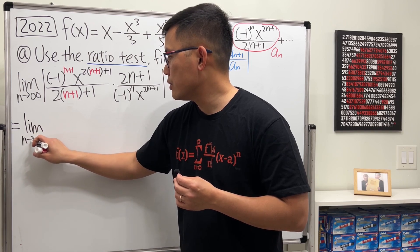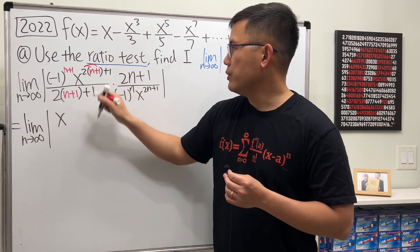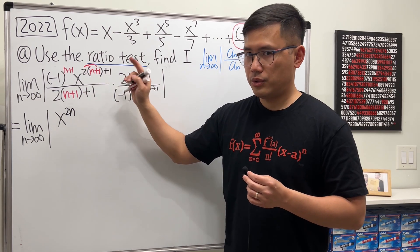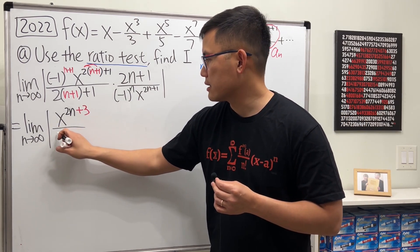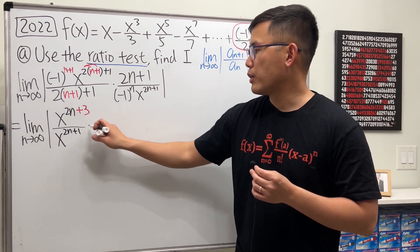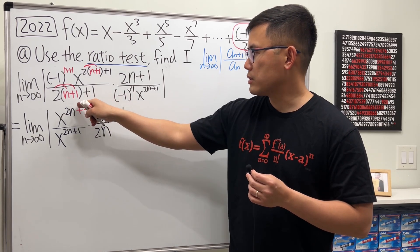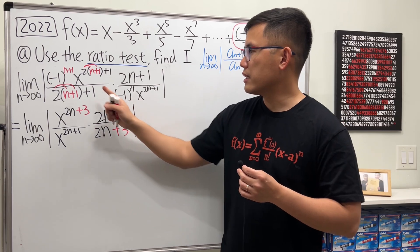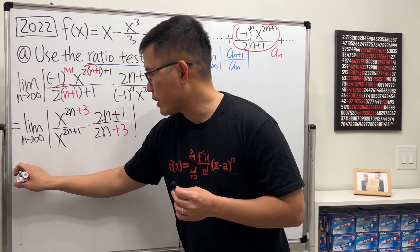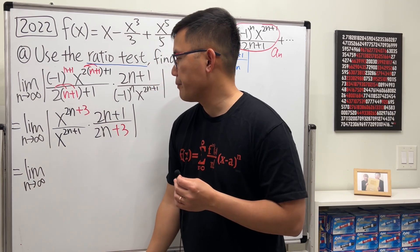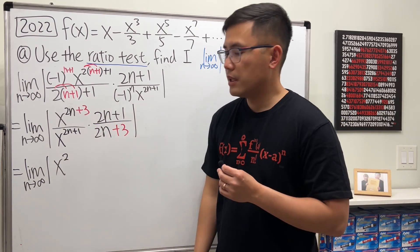We are now looking at the limit as n goes to infinity. For the x terms: distributing the 2 gives 2n+2, and adding one more gives 2n+3 for the exponent in the numerator. The denominator has x to the 2n+1, and the coefficient 2n+1 over 2(n+1)+1 which is 2n+3 again. We subtract the exponents: 2n+3 minus (2n+1) equals 2, so we get the limit of absolute value of x squared times (2n+1)/(2n+3).